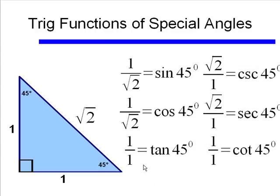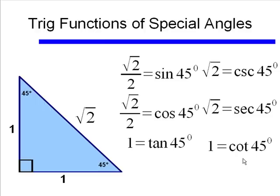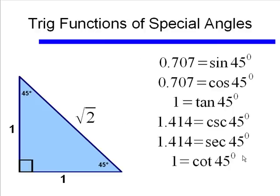The cosecant, secant, and cotangent of 45 degrees are all found the same way. Just like sine and cosine are equal, our cosecant and secant are also the same, because the opposite and adjacent legs happen to be the same length — both 1. And the cotangent is the same as the tangent. Rationalizing the denominators, the sine of 45 degrees is square root of 2 over 2, as is cosine of 45 degrees. Rounded, sine and cosine of 45 degrees both equal 0.707, and the rest of the values are listed.